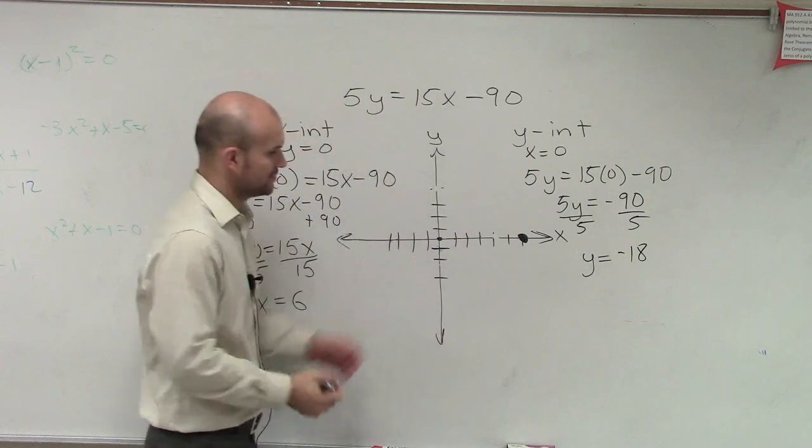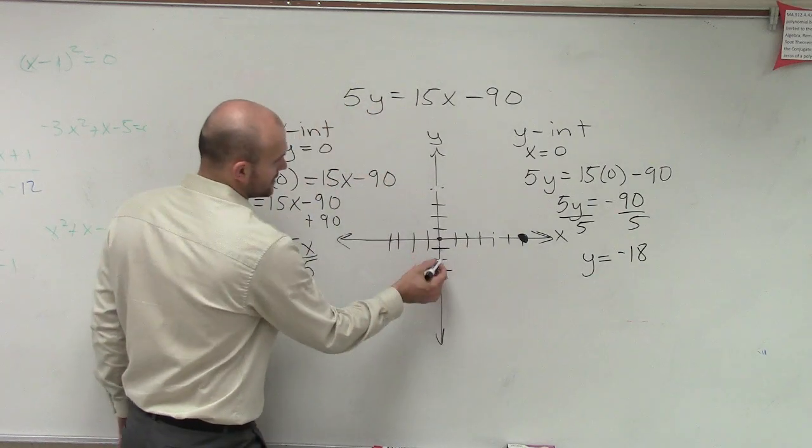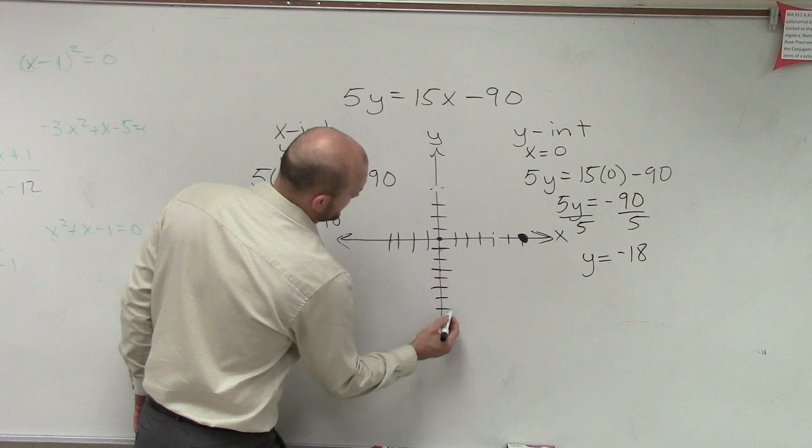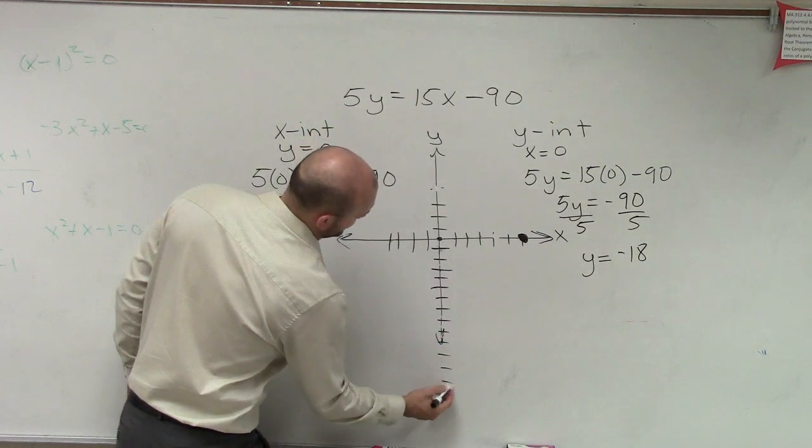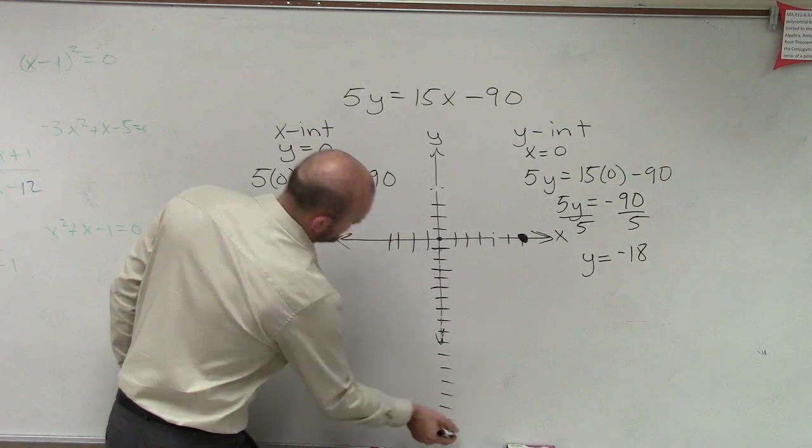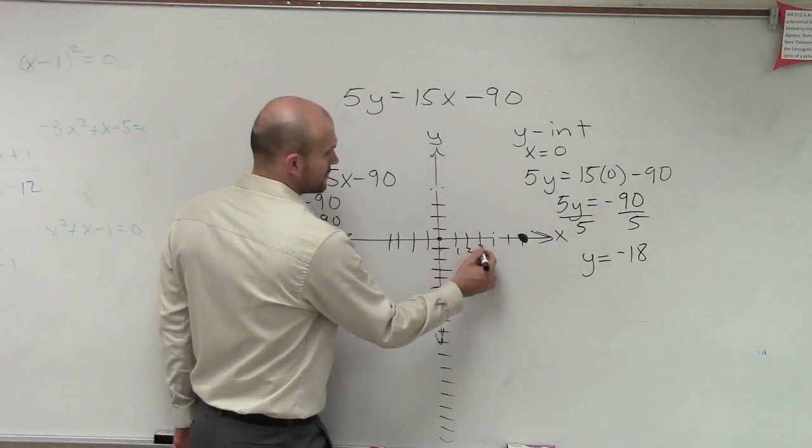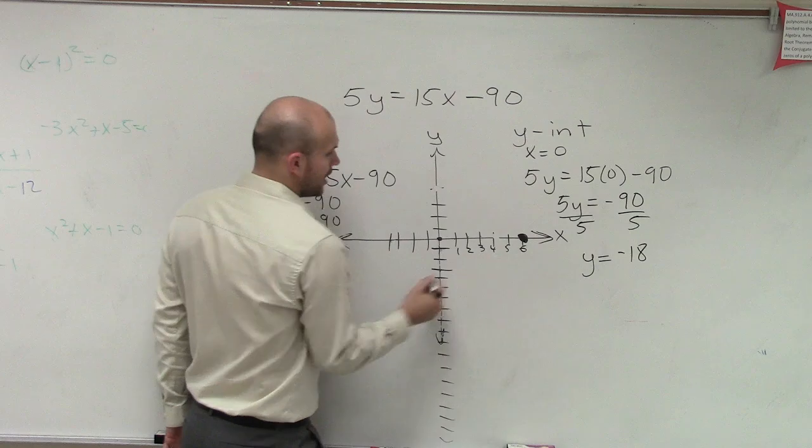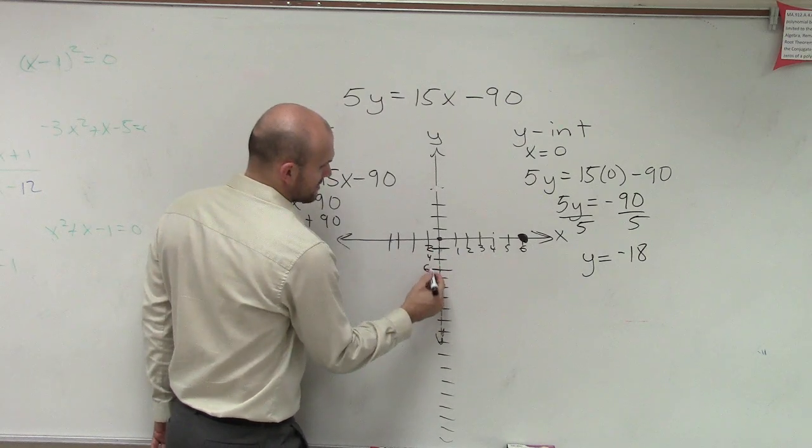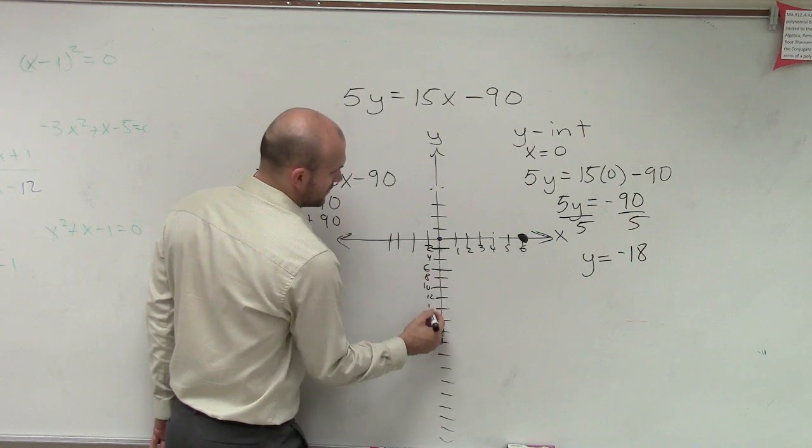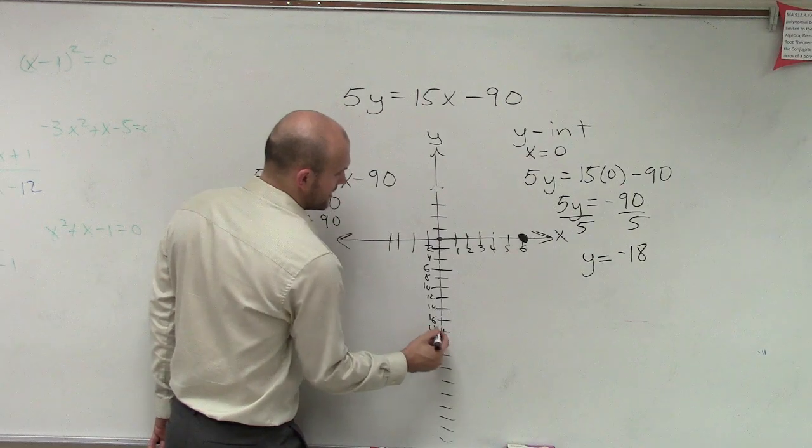So you could do a different variation or you could go 1, 2, 3, 4, 5, 6, 7, 8, 9, 10, 11, 12, 13, 14, 15, 16, 17, 18. All right. Well, then maybe what I'll do is if I'm going by ones, I'll go by twos: 2, 4, 6, 8, 10, 12, 14, 16, 18.